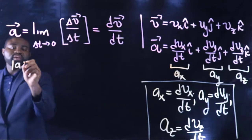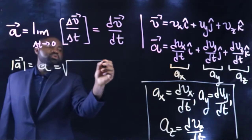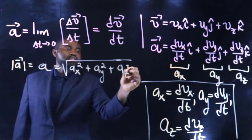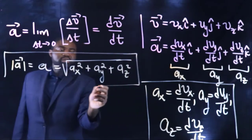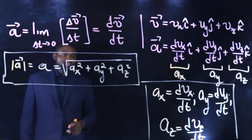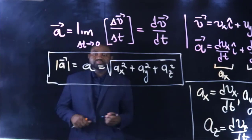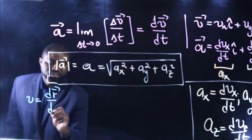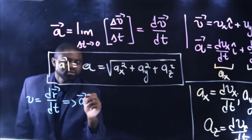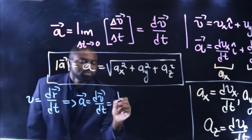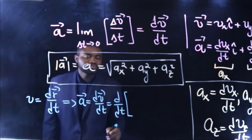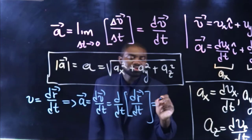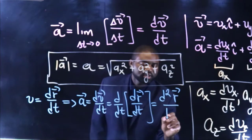Hence, the magnitude of a is therefore equal to the square root of ax squared plus ay squared plus az squared. This defines the magnitude of the acceleration. One of the things you must also take note of is the fact that v is equal to dr/dt. That would mean that a, which is dv/dt, will be equal to d/dt of dr/dt, which is going to be equal to d²r/dt².